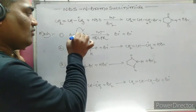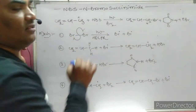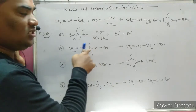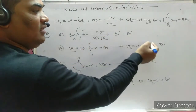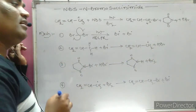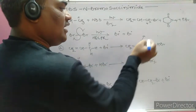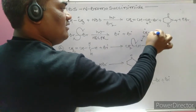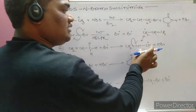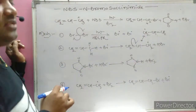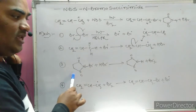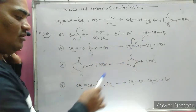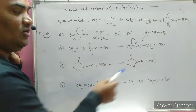The bromine free radical abstracts a proton from the allylic position of propene's carbon atom, generating an allylic free radical that is highly stable due to resonance. The electrons delocalize homolytically, giving CH2 radical CH double bond CH2, stabilized by resonance. This is why substitution occurs only there. The formed HBr then reacts with NBS, eliminating Br2 and forming succinamide. The allylic free radical reacts with bromine to give the allylic bromination product.